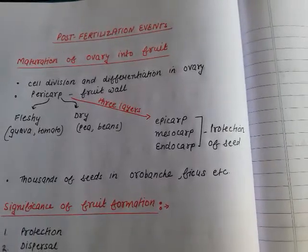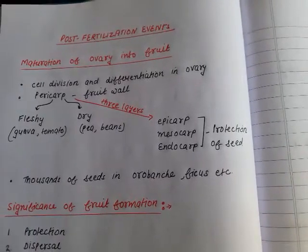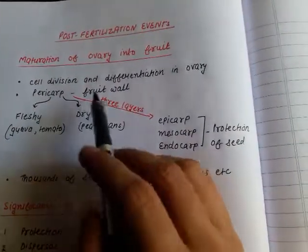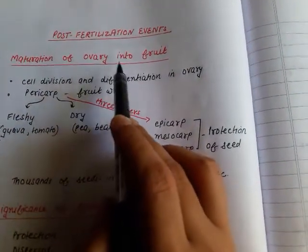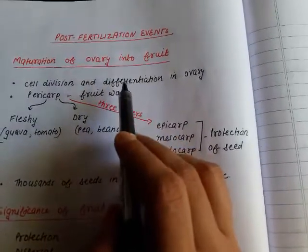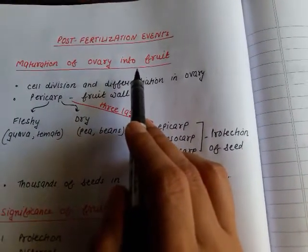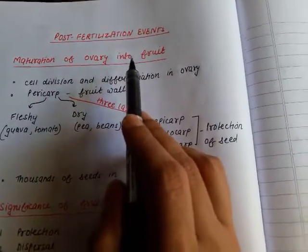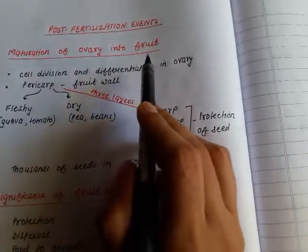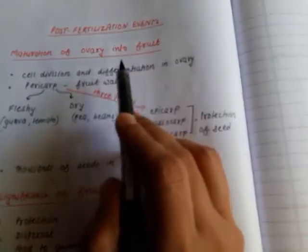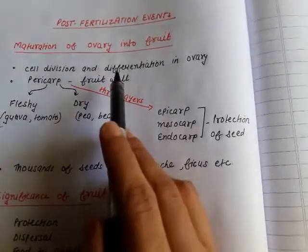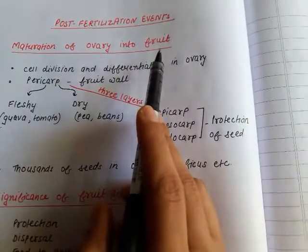Hello students, let us start our today's class with our topic: maturation of ovary into fruits. We have done with the development of embryo, development of endosperm, and maturation of ovule into seed. The next step is the maturation of ovary into fruit.